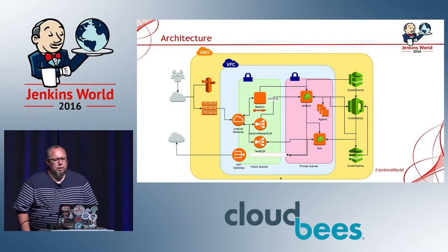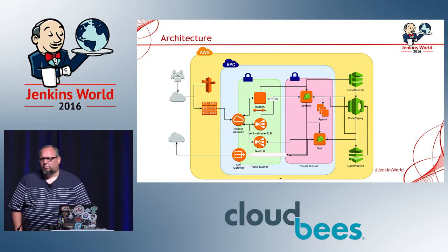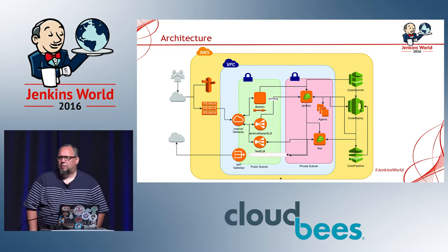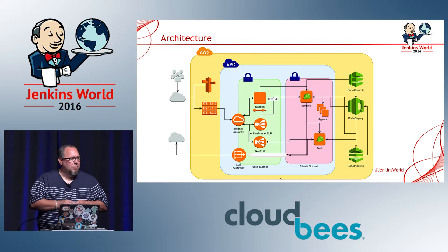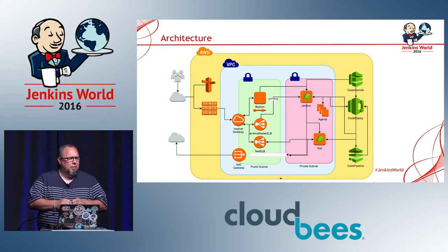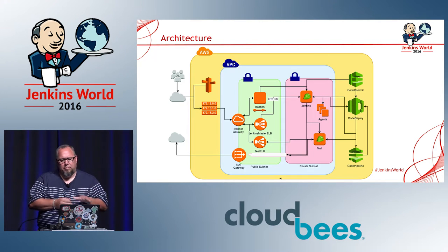Here's today's architecture. It's basically a set of resources split into two different subnets — one's a public subnet, one's a private subnet. The only thing I have in my public subnet are my bastion server, my internet gateway, and my NAT gateway. On the private side, that's where I have my Jenkins, my test servers, and my agent servers.